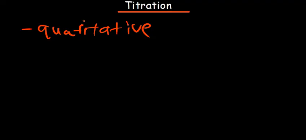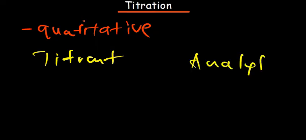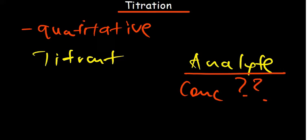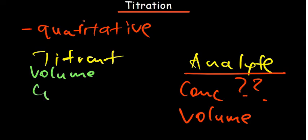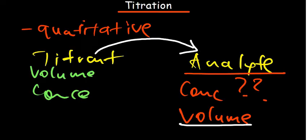We have what we call the titrant and what we call the analyte. In titration, the main goal is to find the concentration of the analyte. The concentration of the analyte is not known, but we know its volume. For the titrant, we know both its volume and its concentration. So titration is the addition of a solution of known concentration — the titrant — to an analyte of known volume but unknown concentration.